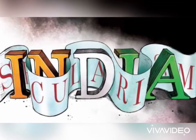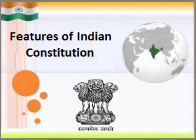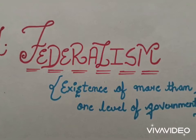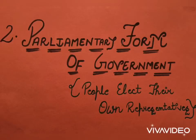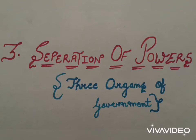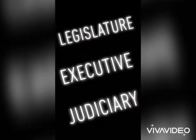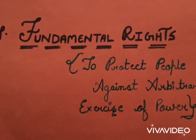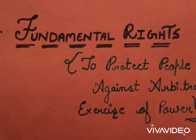In the previous chapter, you all read about the various features of our Indian constitution. Let's recall them. Number one was federalism, which said that there should be more than one level of government in the country. The second was parliamentary form of government, which said that people have the right to elect their own representatives. The third was separation of powers — all powers should not be given to a single hand but divided amongst various organs of government: legislature, executive, and judiciary. The fourth was fundamental rights — our constitution provides various rights to protect people against the arbitrary exercise of power.